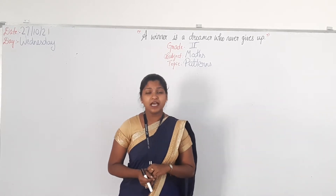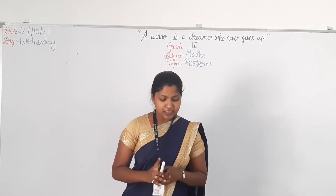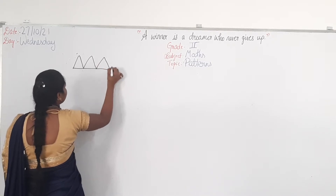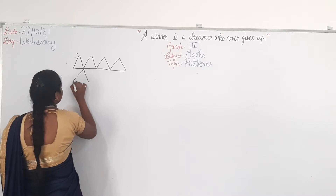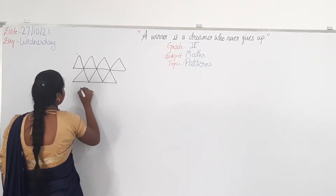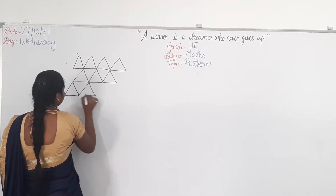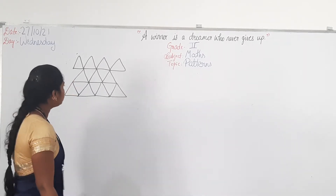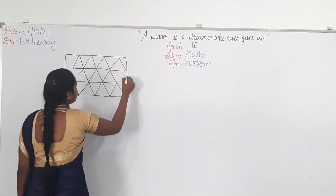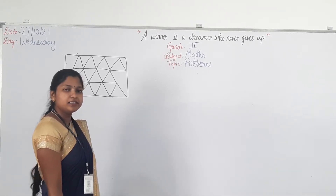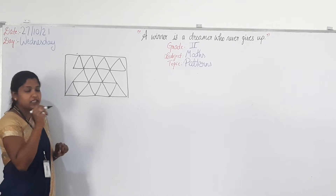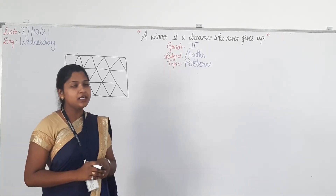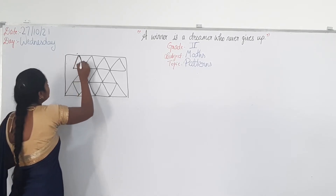So today in this class I will give you tiles and you have to find out the basic shape. I will draw it on the board. I am using a triangle to form a pattern. Can you see here? I have formed it like a tile shape. Even a tile is also a pattern. Can you see I used the triangle shape to form a tile?